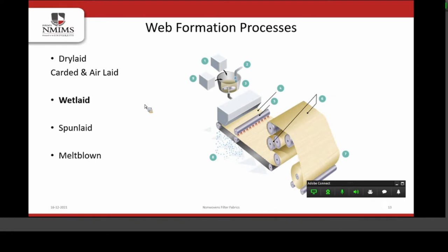The next process, specifically used for nonwoven fabric, is called wet laid — the same technique used for making paper. Here, short fibers are mixed thoroughly with water, and the suspension is transferred onto a perforated conveyor belt. After transferring, it takes the shape of a sheet. This sheet is further calendared to remove excess water and then dried to form a nonwoven web or nonwoven fabric.